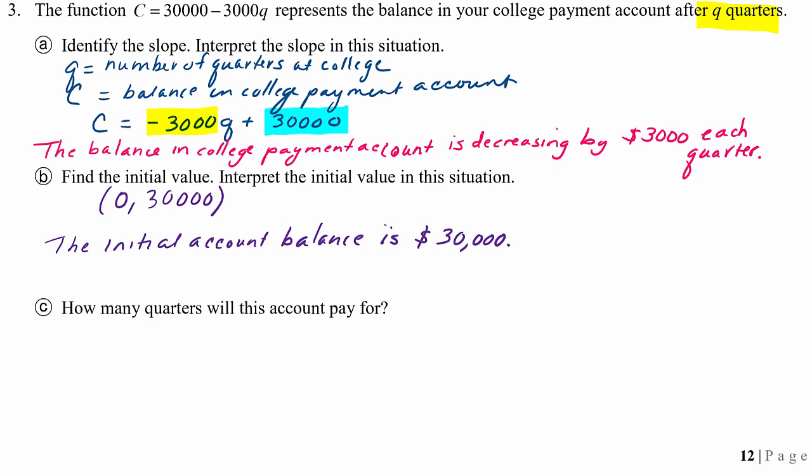And now in C, we're asked how many quarters will this account pay for? So with $30,000, how many quarters can we pay for? And yes, we're looking for C to be equal to 0 by the time we finish paying for all the quarters. So we're going to set C to 0, and then we're going to solve for Q, and that will give us how many quarters we can pay for with this money in the account.